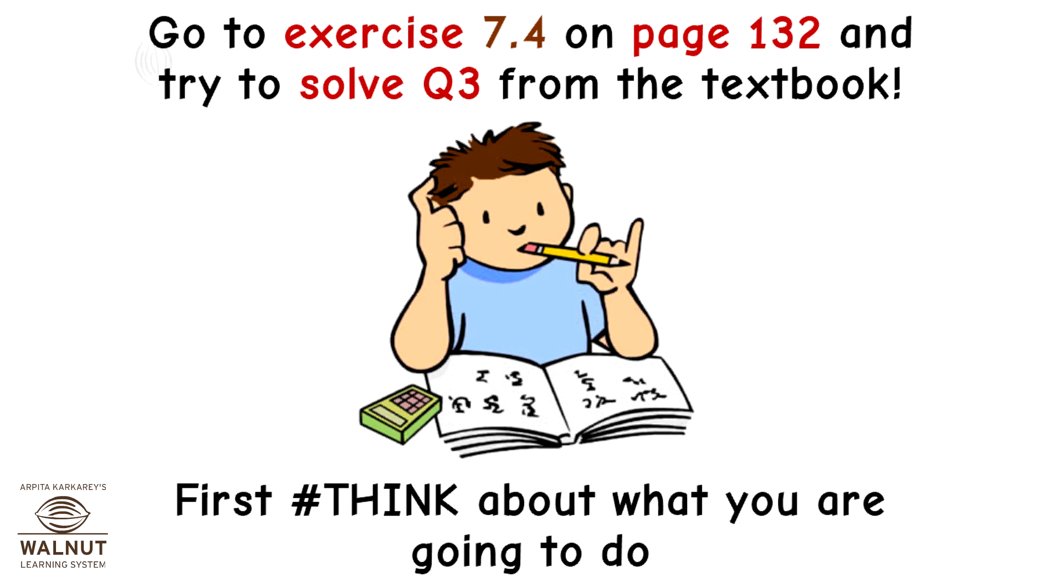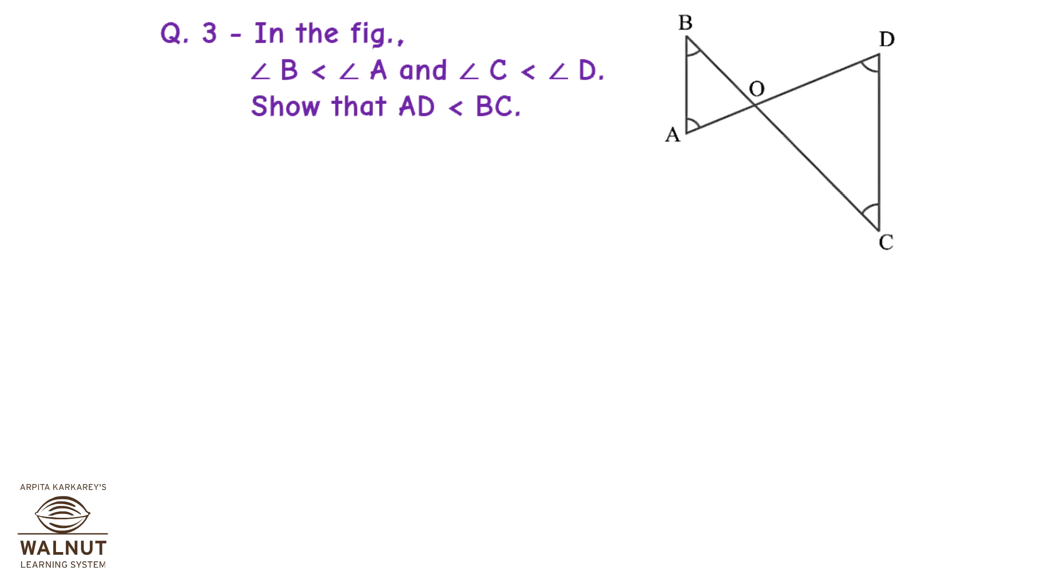Go to exercise 7.4 on page 132 and try to solve question 3 from the textbook. First, think about what you are going to do. Question 3: In the figure, angle B is less than angle A and angle C is less than angle D. Show that AD is less than BC.